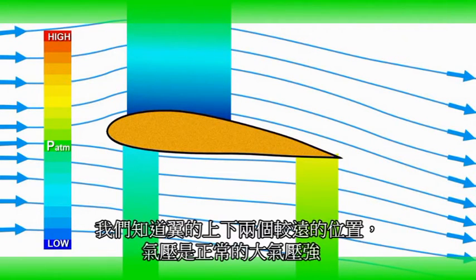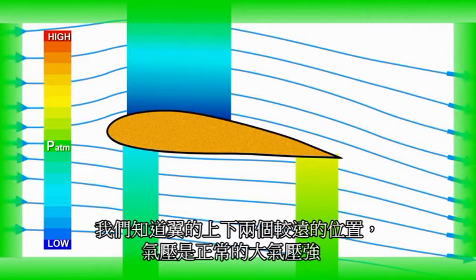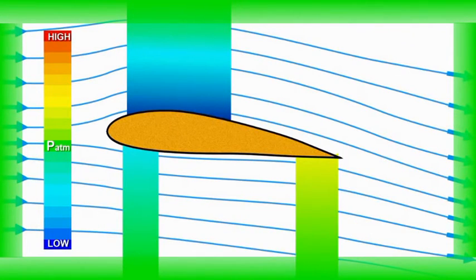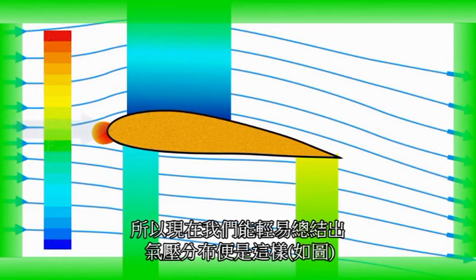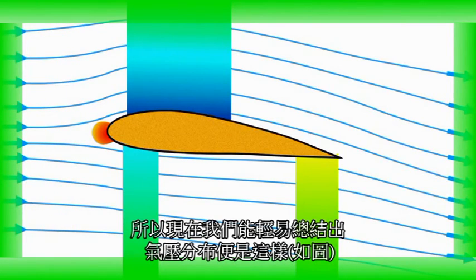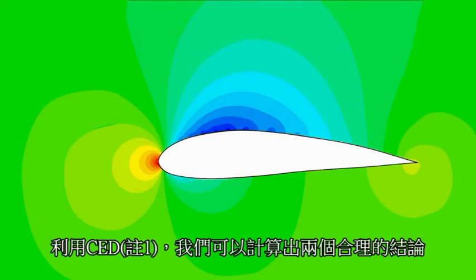We know that far away from the upstream and downstream, the pressure is atmospheric. At the leading edge of the airfoil, a high pressure region is generated as the flow directly hits this portion. So, we can easily construct a pressure distribution, as shown. The CFD results conform exactly to our logical conclusions.